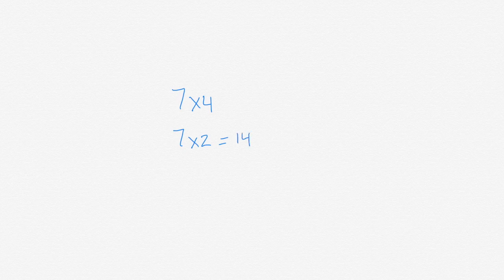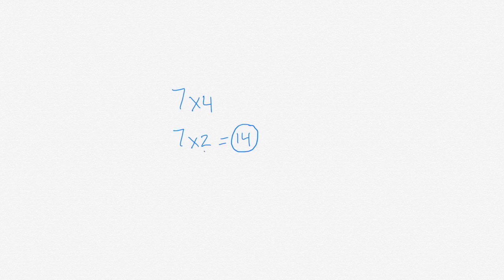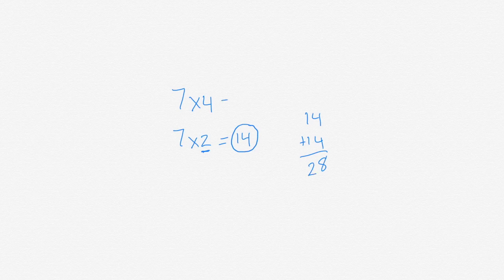So that 7 times 2 is 14. In order to get 7 times 4, I need to double this product of my double problem. So 14 plus 14 is going to give me 28. Therefore, 7 times 4 is 28.